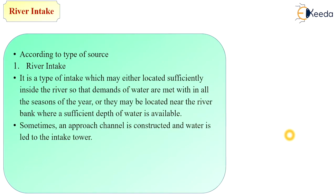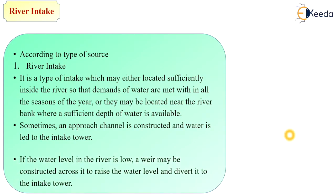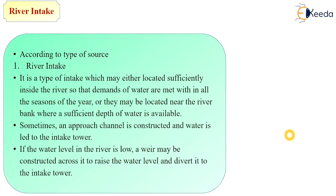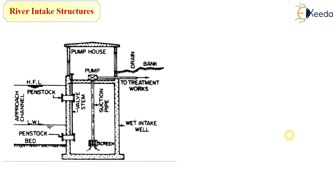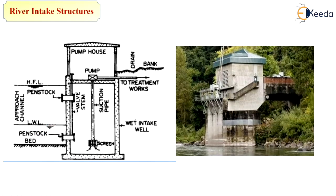River intake structures are constructed under or along the river. Sometimes an approach channel is constructed and water is led to an intake tower. If the water level in the river is low, a weir may be constructed across it to raise the water level and divert it to the intake tower. As seen in the typical diagram, the low water level and high flood level are shown, with a penstock for water entry. A screen is provided to avoid floating and silt materials, and a suction pipe sucks the clean water through a pump and conveys it to the treatment plant.